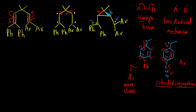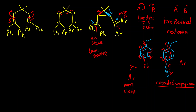So which bond will break? The more reactive (less stable) radical corresponds to the Ph side. Bond A will break because that carbon is less stable and hence more reactive. The radical directly attached to the Ar group is more stable and less reactive, so bond B will not break — bond A breaks.